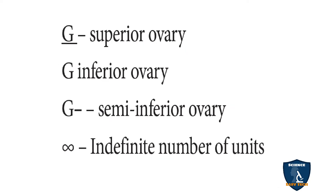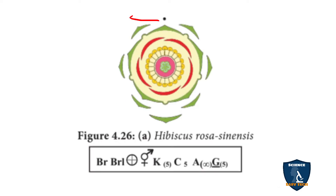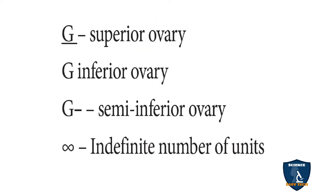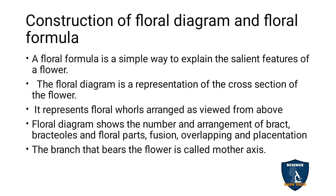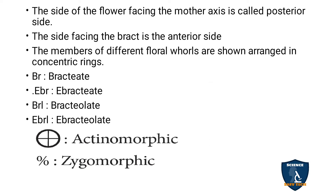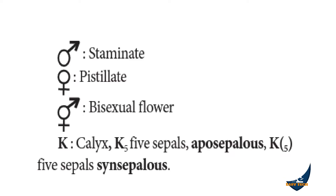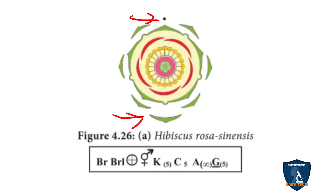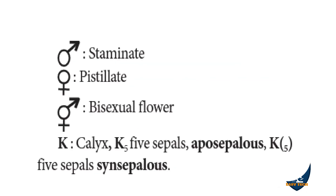In the diagram, the mother axis is at the posterior or back side, and the bract faces the front, which is the anterior position of the flower. The numbers of different floral whorls are shown arranged in concentric rings — the floral parts are arranged in the form of rings.